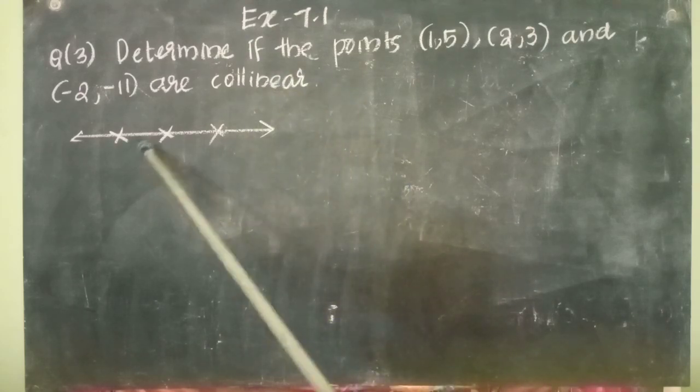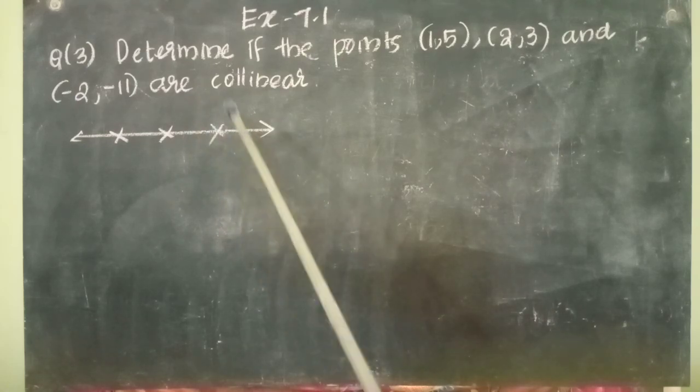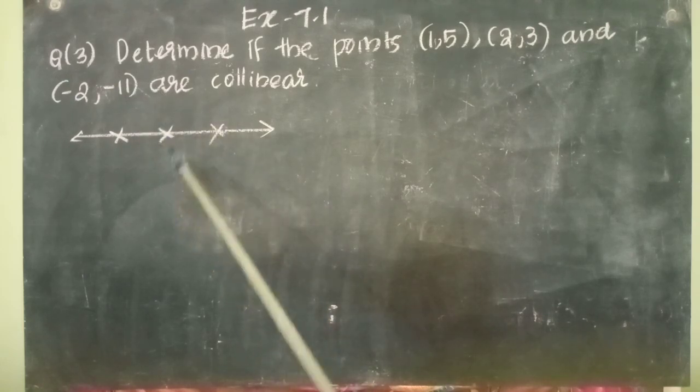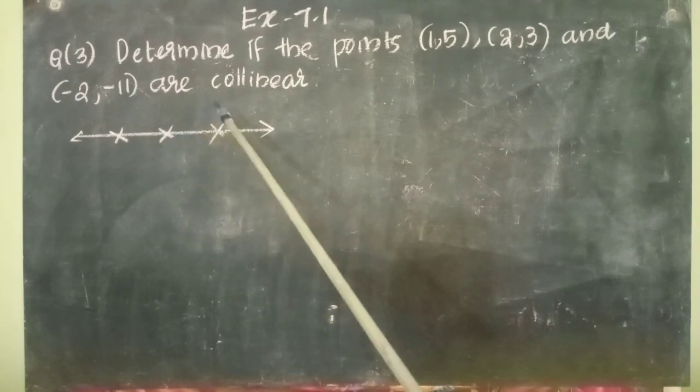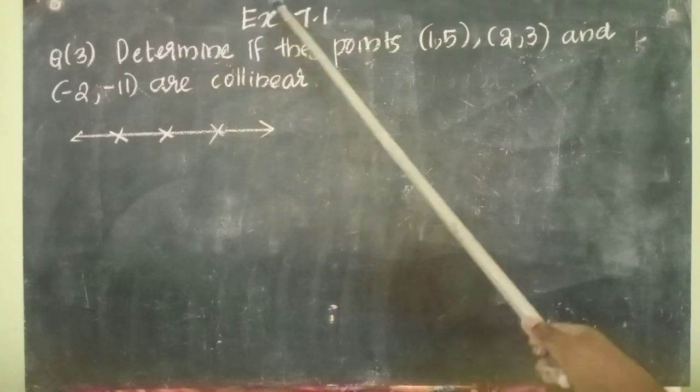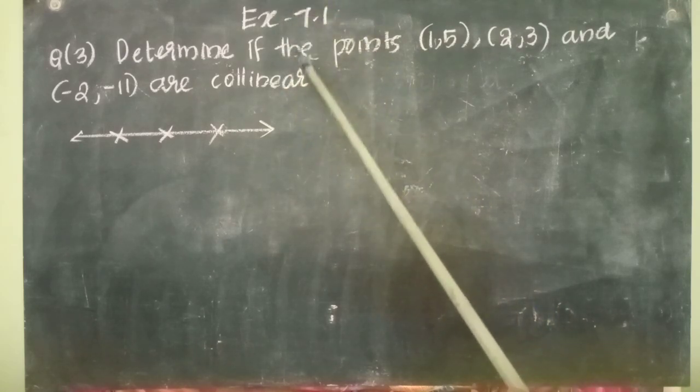We know 3 or more points lying on the same straight line are called collinear points. So, these 3 points cannot form a triangle. That means if the points are collinear, the area of triangle will be equal to 0. Here the question is, determine if the points are collinear or not.